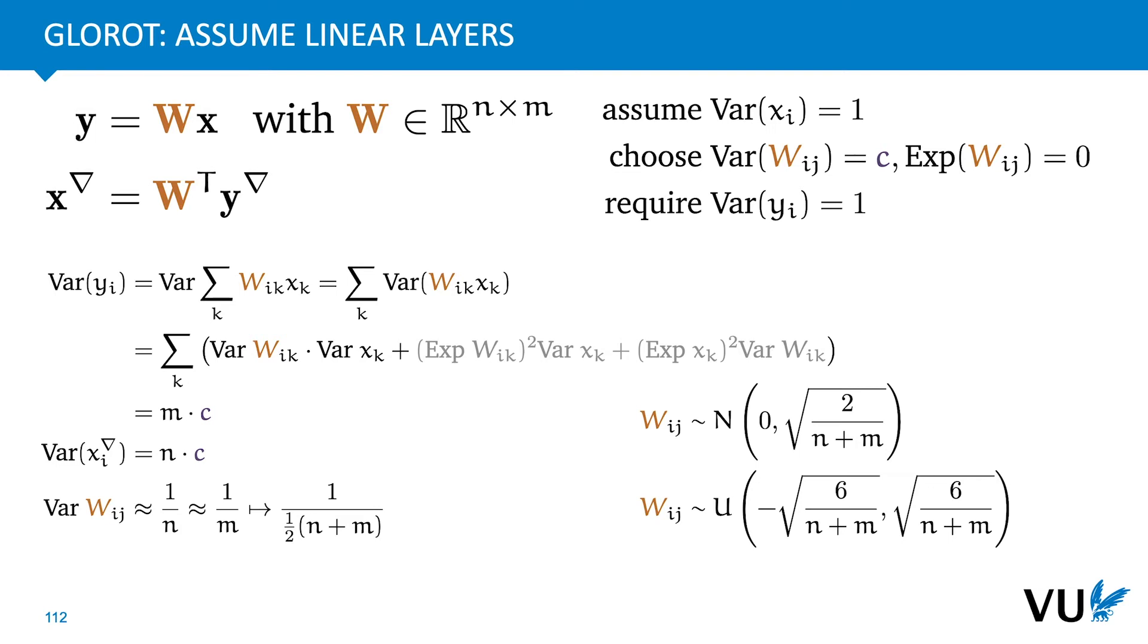So to satisfy the first constraint we need to set the variance of wij equal to one over n, and to satisfy the second constraint we need to set the variance of wij equal to one over m. We can't do both, so we set the variance equal to one over the average between n and m as a kind of middle ground between the two constraints, and hopefully that'll get us close enough to a variance of one to give good training and no vanishing gradients. There's a couple of ways to sample from a distribution with this kind of variance. The standard Glorot initialization uses a uniform distribution with these bounds, and if you work out what the variance of these bounds is then you get the required value, but you can also use a normal distribution with this standard deviation and then you also get the required variance over your wij values.